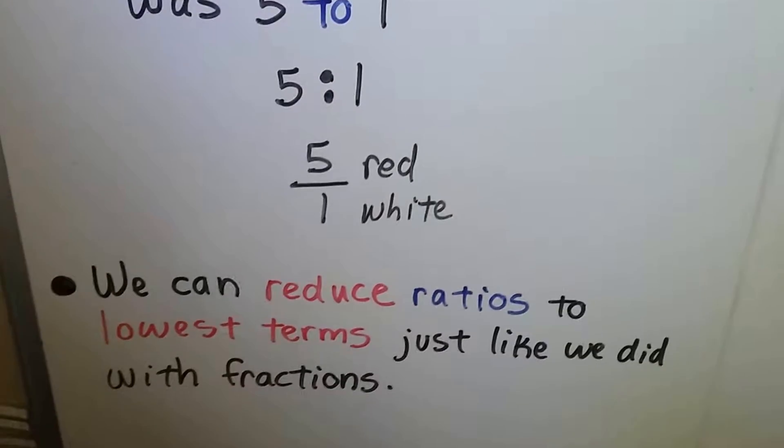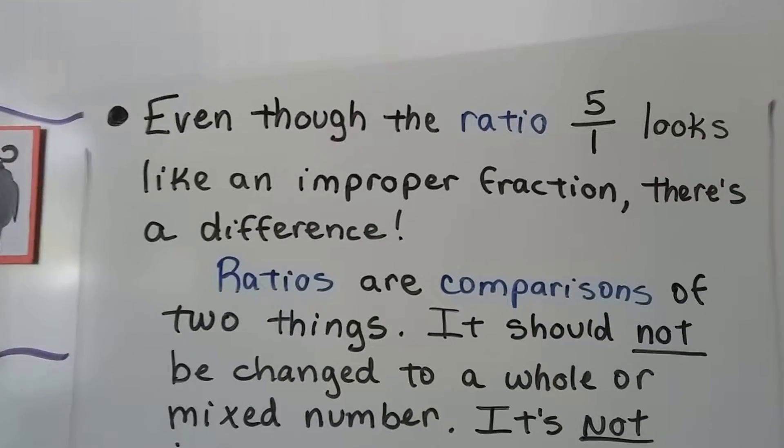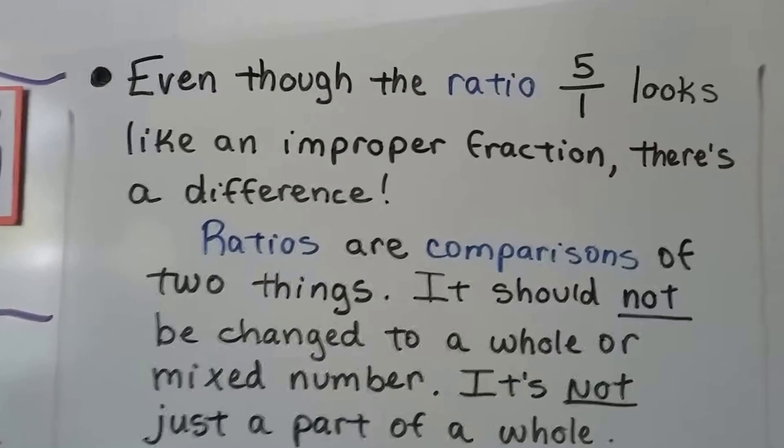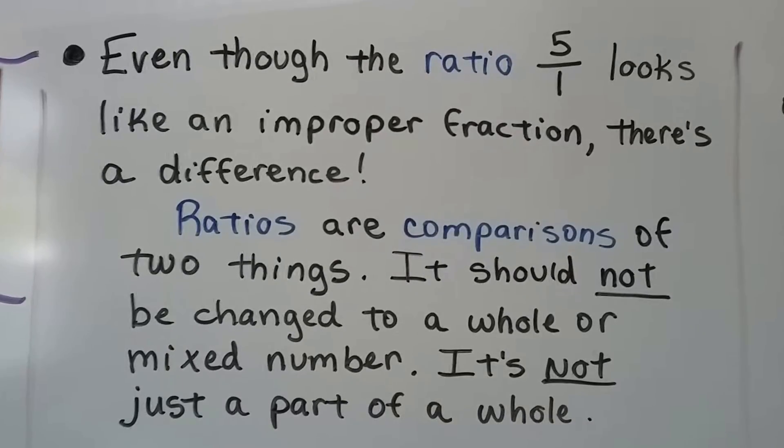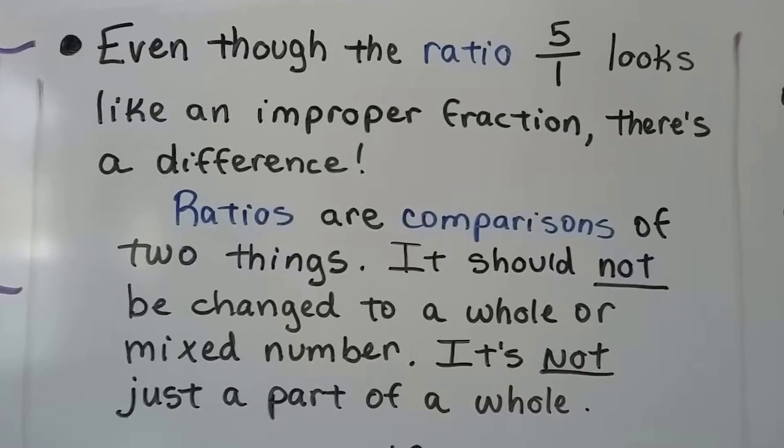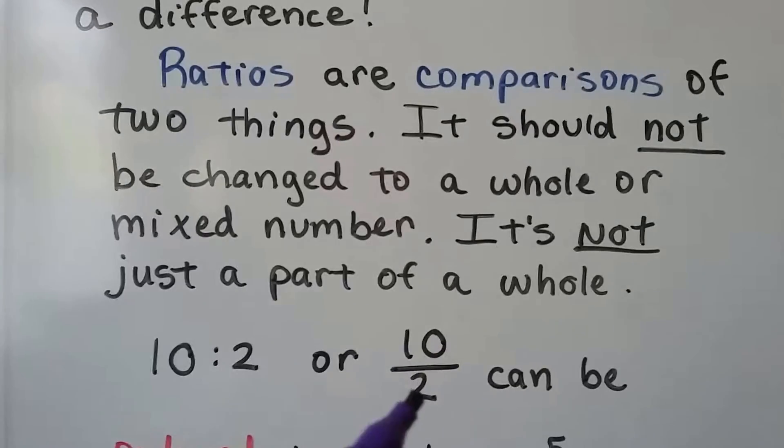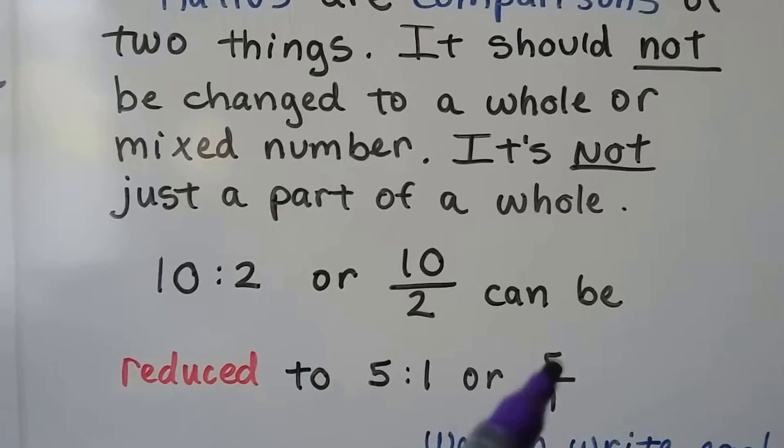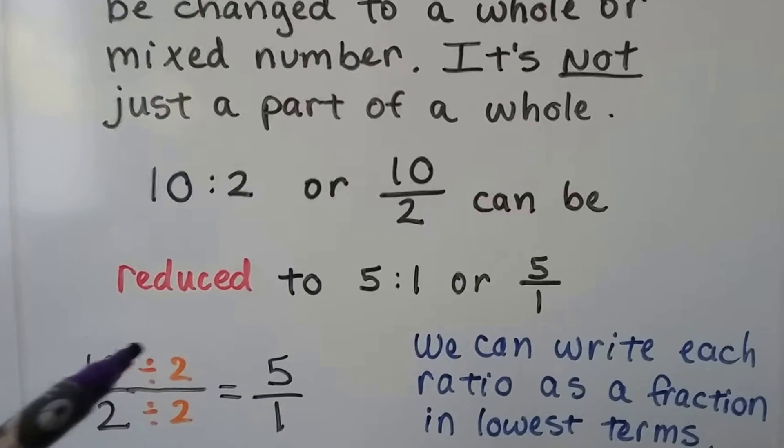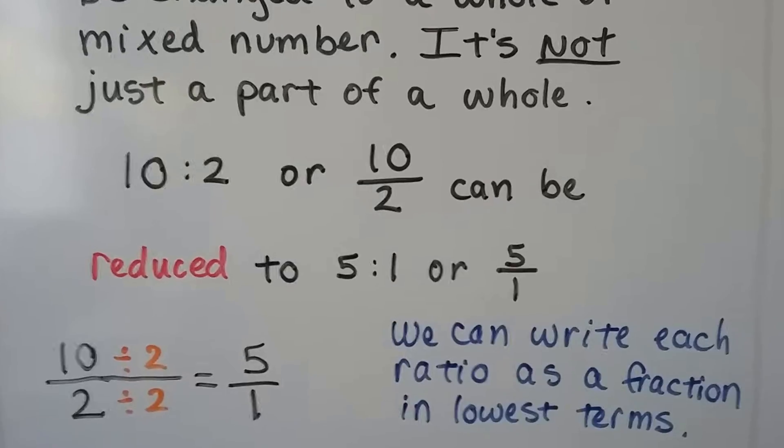We can reduce ratios to lowest terms just like we did with fractions. Even though the ratio 5 to 1 looks like an improper fraction, there's a big difference. Ratios are comparisons of two things, and should not be changed to a whole or mixed number. It's not just part of a whole, it's a comparison. We can write each ratio as a fraction in lowest terms.